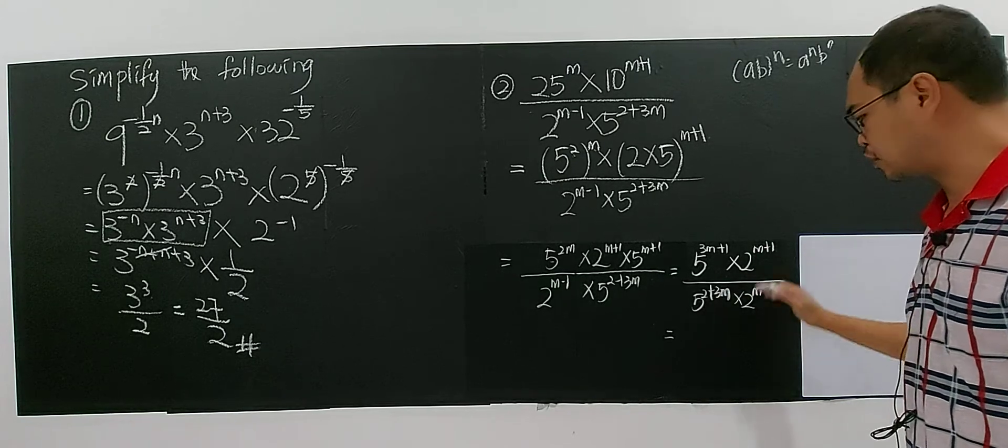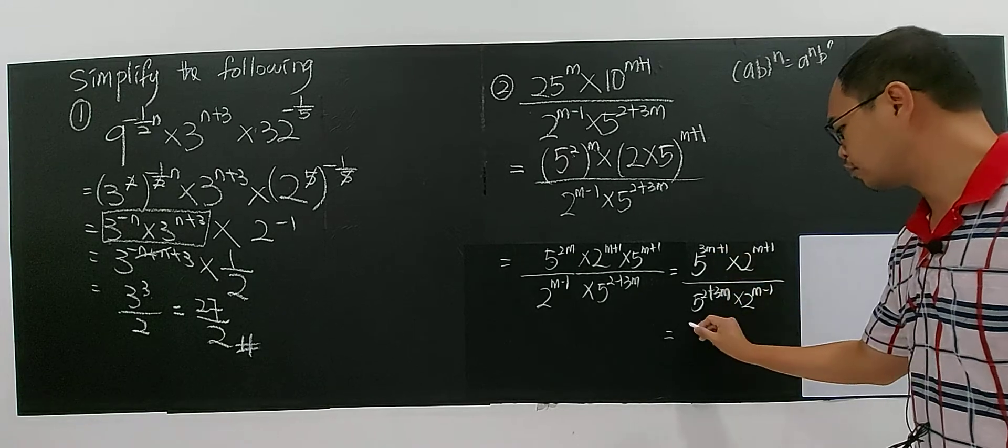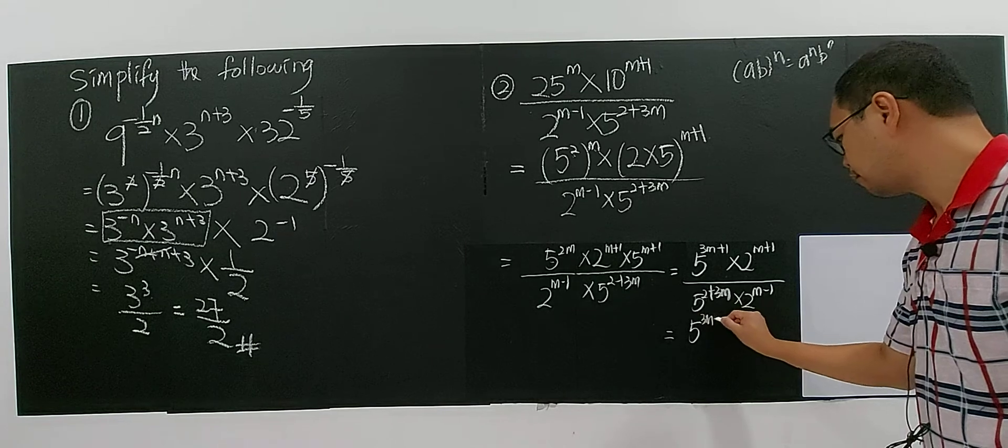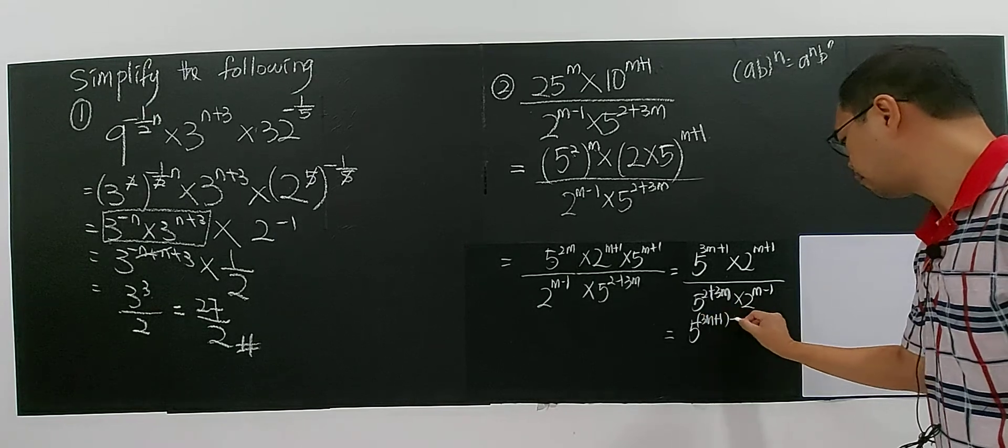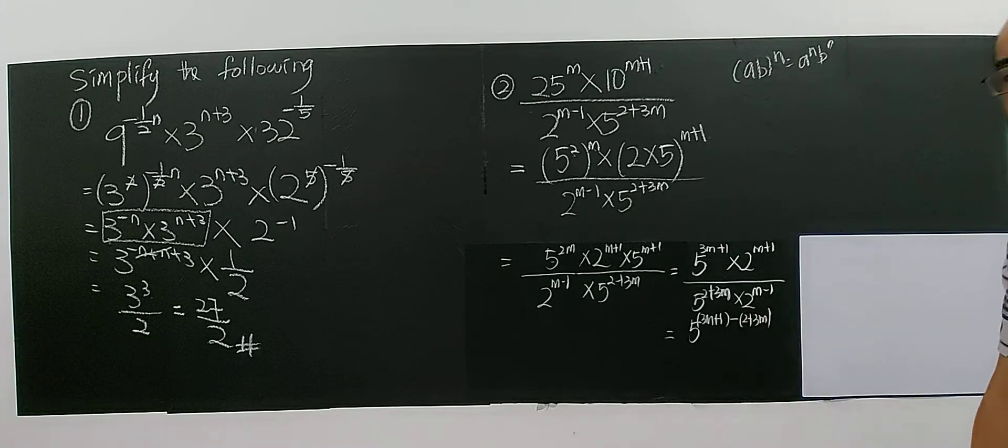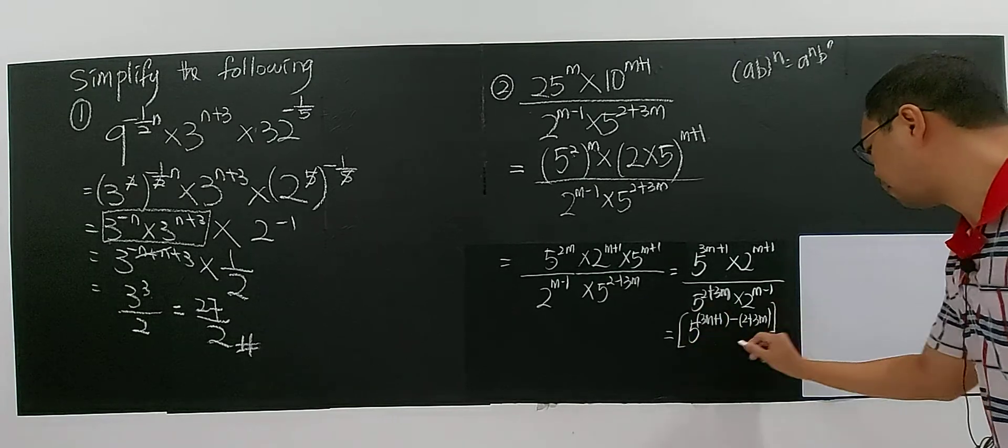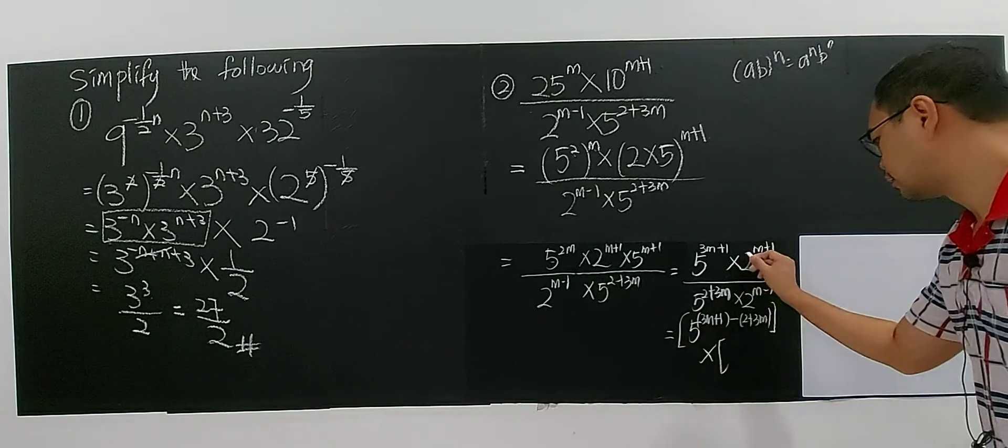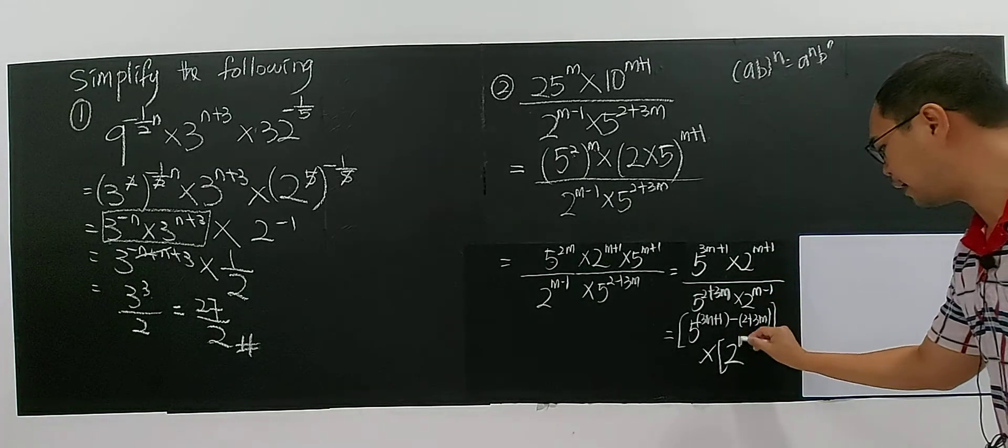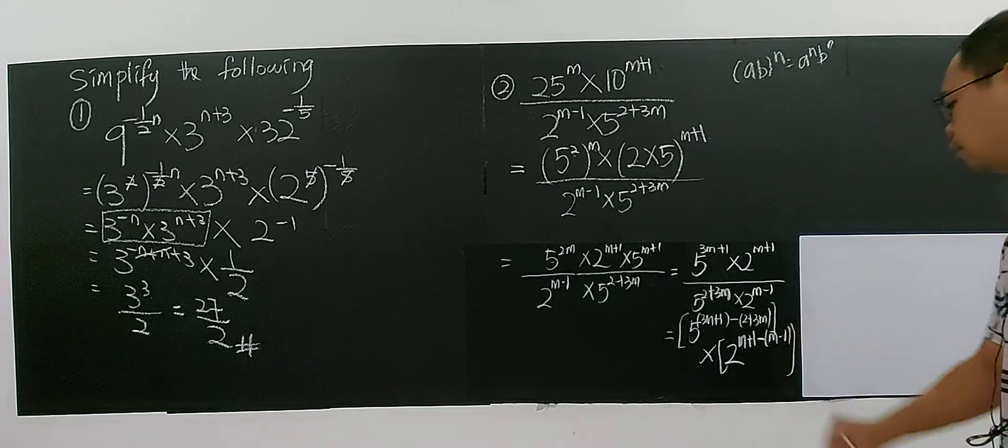A, A, M minus N. So it means 5, 3M, 3M plus 1, you have to minus with 2 plus 3M. And the 5. Okay, this is one bracket. And multiply the 2. This is base 2. You divide, minus the index. M plus 1 minus with M minus 1.